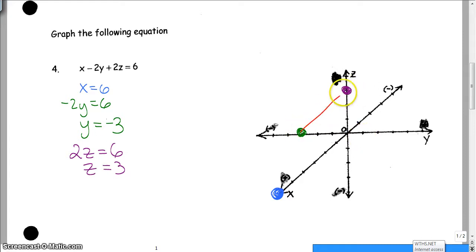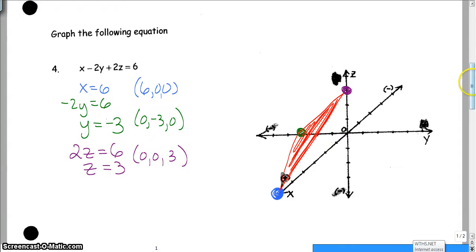Now all you have to do is connect your dots, color it in, and you are done. That's how you graph a plane. Now, just so you know, this coordinate is (6, 0, 0). This coordinate right here is (0, -3, 0). And this last one is (0, 0, 3). Okay, so that's that.